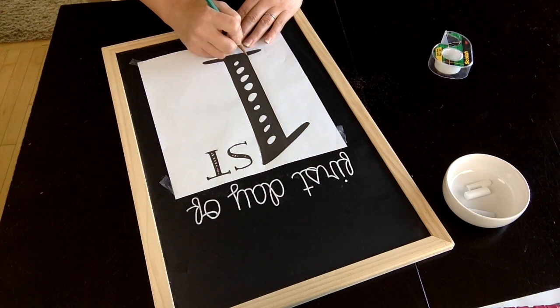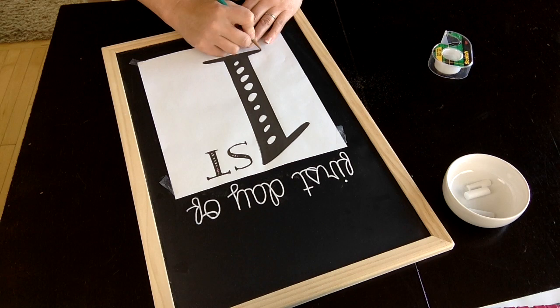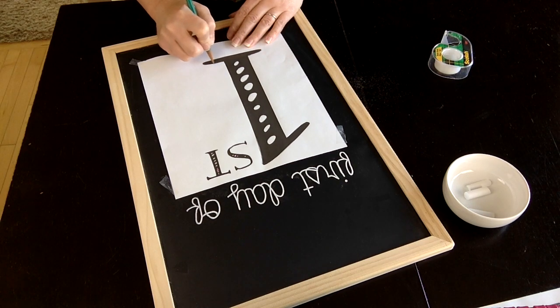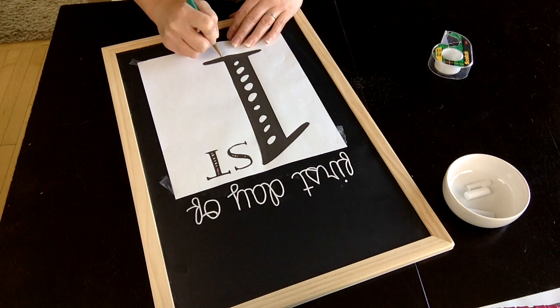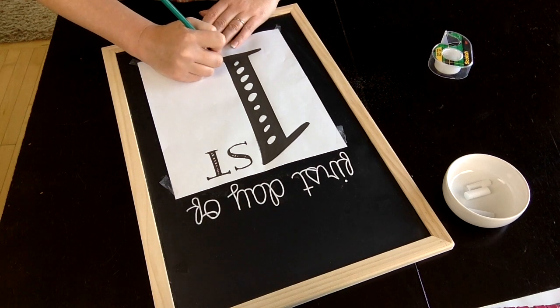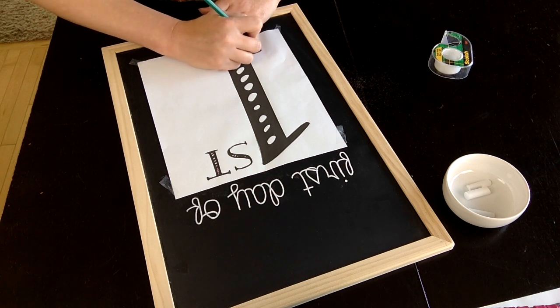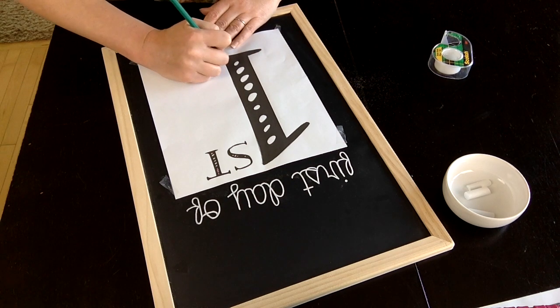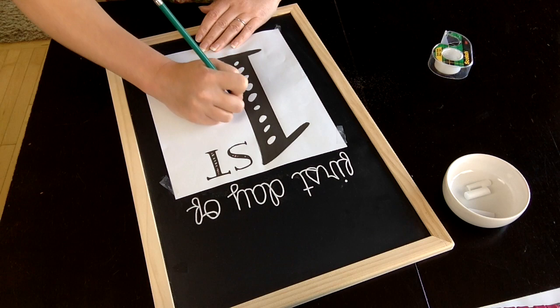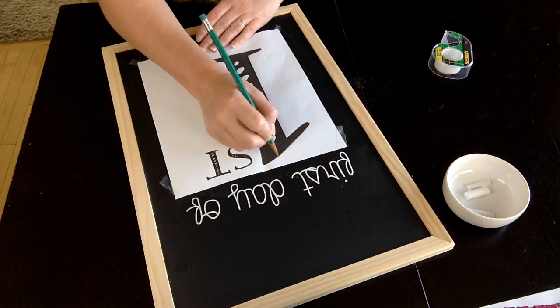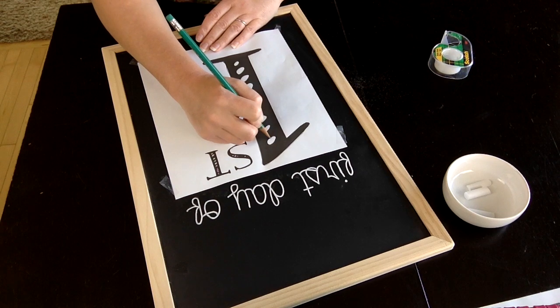For chalkboard art back-to-school signs, however, if you wanted to do this on your own with something else at home, just find your favorite font and create a Word document. You can easily print that out and make whatever kind of design or lettering you would like.